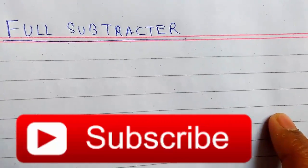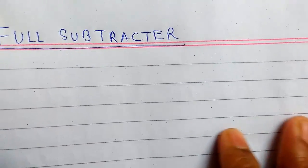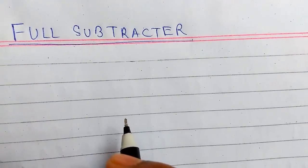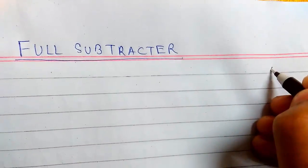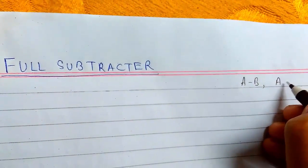A full subtractor has three input bits: minuend A, subtrahend B, and borrow in (Bin). The full subtractor performs two subtraction operations. In the first subtraction, A minus B is done, and after that, in the second subtraction,